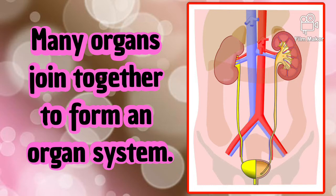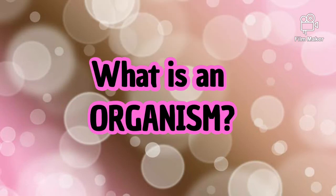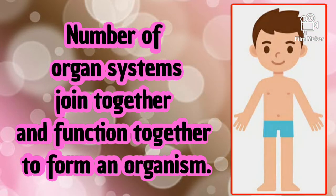Many organs join together to form an organ system. Here you can see an example of the excretory system. A group of organs work together to perform a specific function. Here you can see that different organs are involved and they make up the excretory system, performing the function of excretion.